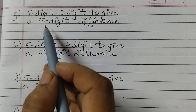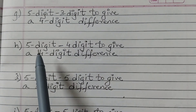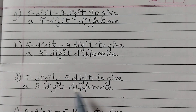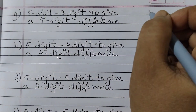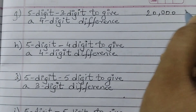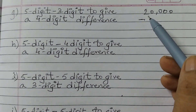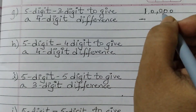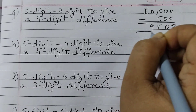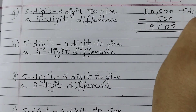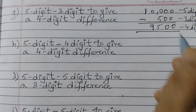Next: 5 digit minus 3 digit to give a 4 digit difference. Let's take 10,000 — a 5-digit number — minus 500, a 3-digit number. We get 9,500. So this is a 5-digit number minus a 3-digit number, and the difference 9,500 is a 4-digit number.